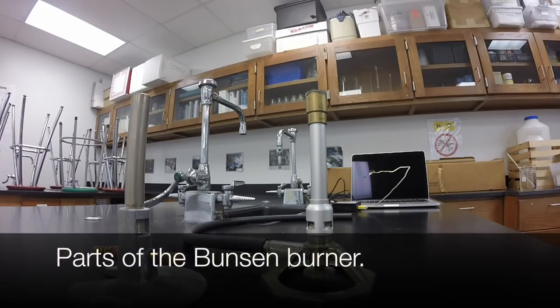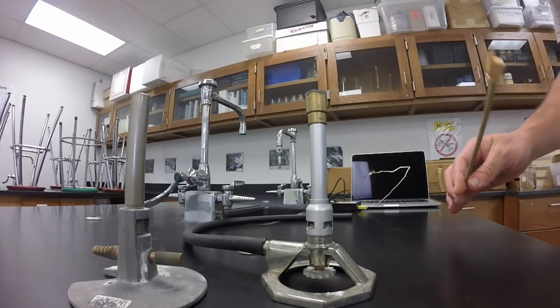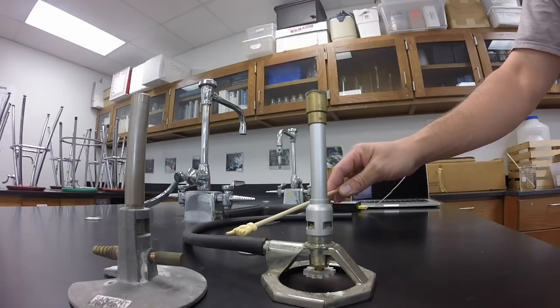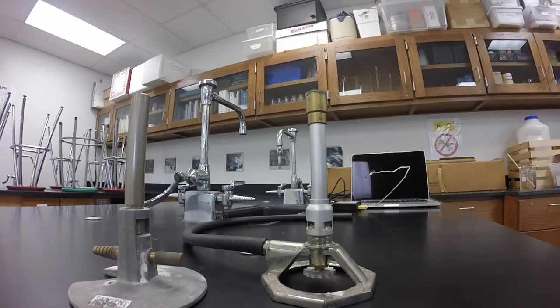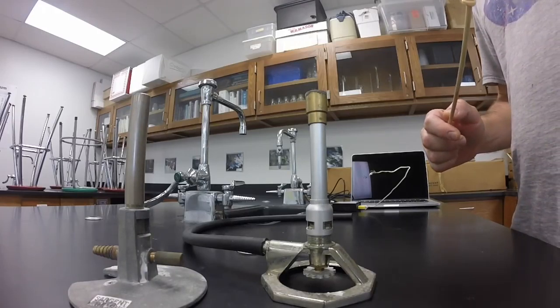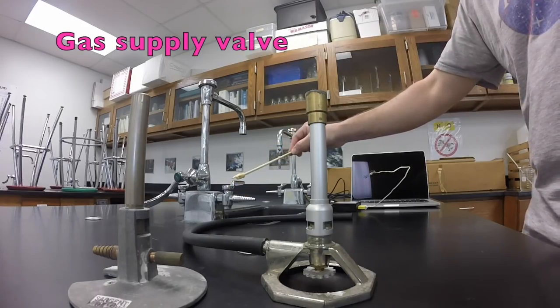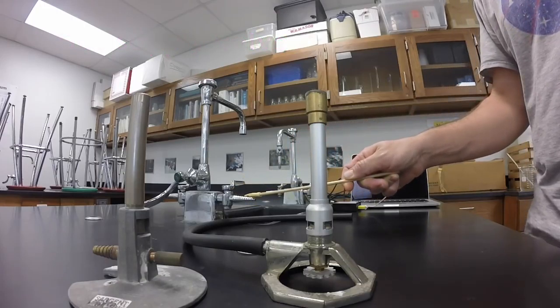The Bunsen burner has several parts that help it generate a flame. First, we have a gas inlet valve with a gas hose attached to it. That brings gas in from the gas source. In most labs, the gas source or gas supply is located somewhere at the lab station. In our labs, you see them here, being pointed to.